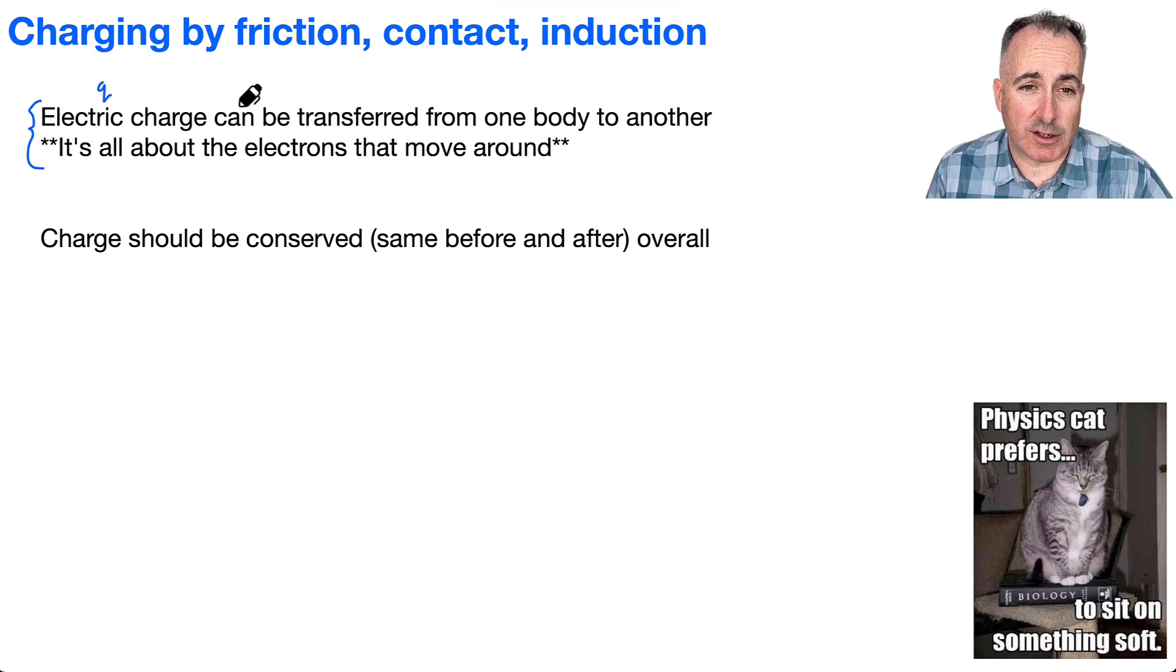And remember, that's Q. And it can be transferred from one body to another. And it's actually all going to be about these electrons moving around, or we can just draw little minus charges moving around. Now, charge should be conserved, which means if you count up all the number of positives and negatives, hopefully nothing has disappeared.